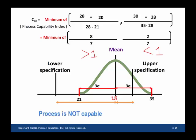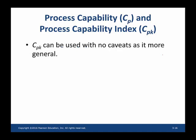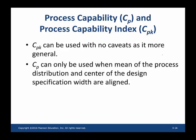To summarize: CPK can be used in any situation because it is more general — it takes the shift in the distribution mean into account. CP can only be used when the mean of the process distribution and the center of the design specification are aligned.